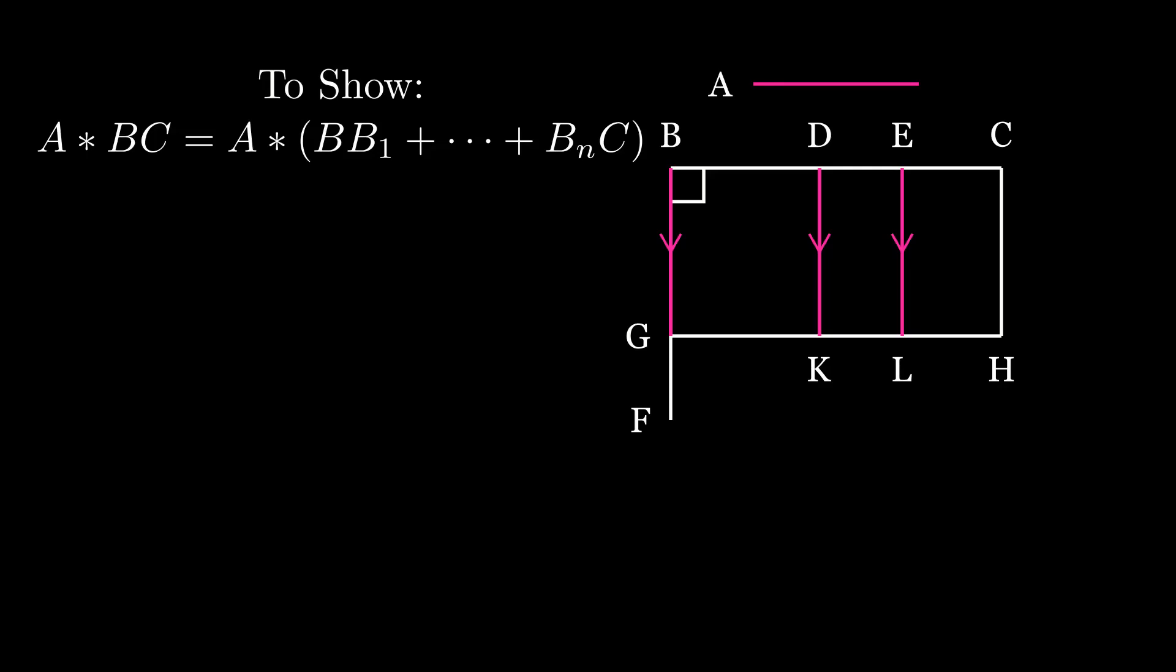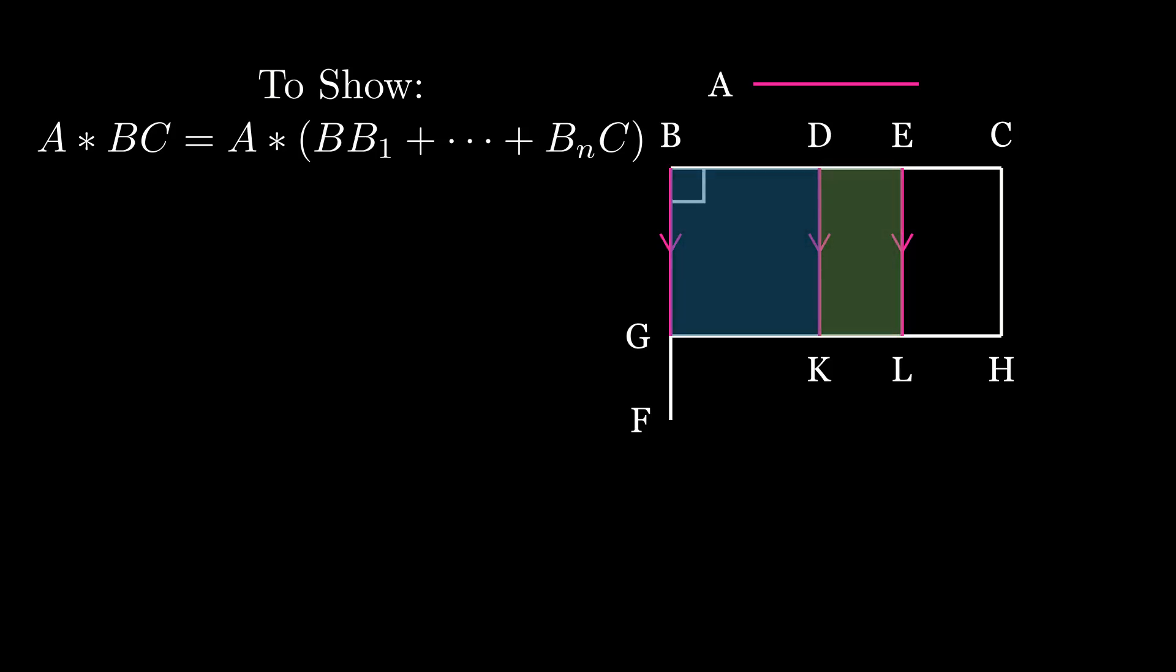It is clear that the rectangle contained by A and BC, which is the rectangle BH, is equal in area to the rectangle BK plus the rectangle DL plus the rectangle EH.